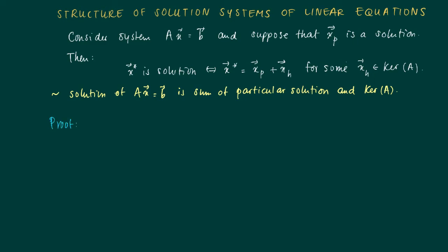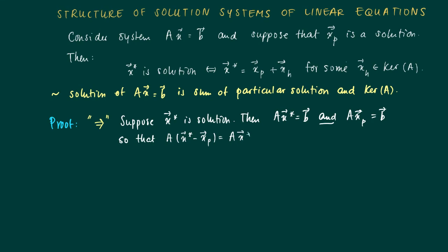The proof goes as follows. First suppose that X star is a solution. Then we know that A times X star equals B. But we also have that A times XP equals B. So now we combine these facts to show that A times the difference vector, X star minus XP, equals A times X star minus A times XP equals B minus B equals the zero vector.